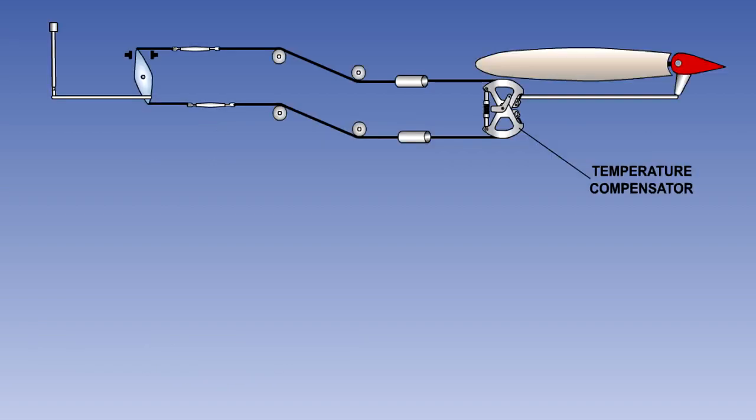Changes of temperature will change the length of the cables, and also the dimensions of the airframe structure. But as they are made of different materials, the rate of expansion will be different. This will cause a change in cable tension. On some aircraft, a temperature compensator is fitted in the control system. This automatically maintains the correct tension if the temperature changes.